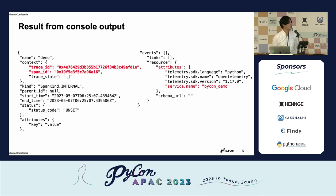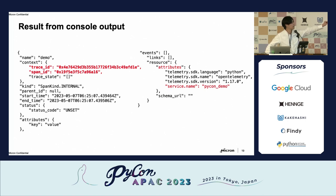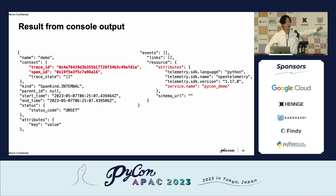Looking at a data point from the console output — within this console output you can see from the trace information we get the trace ID and span ID. On the right-hand side there is an attribute. You can see service.name is set to 'python-demo'. This is how we defined it when we initialized the trace provider.